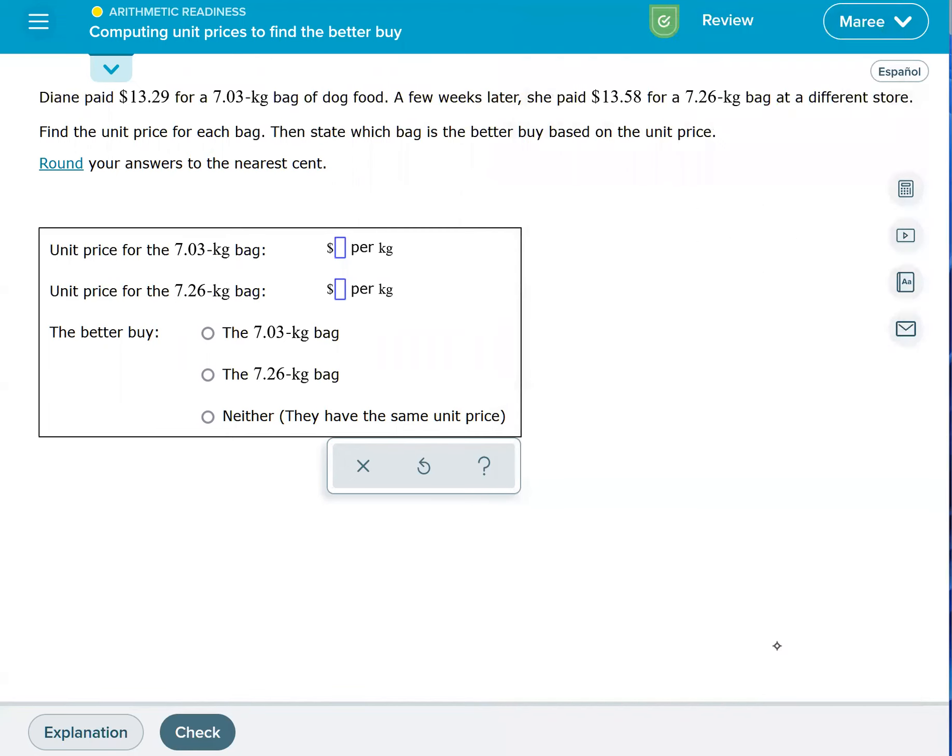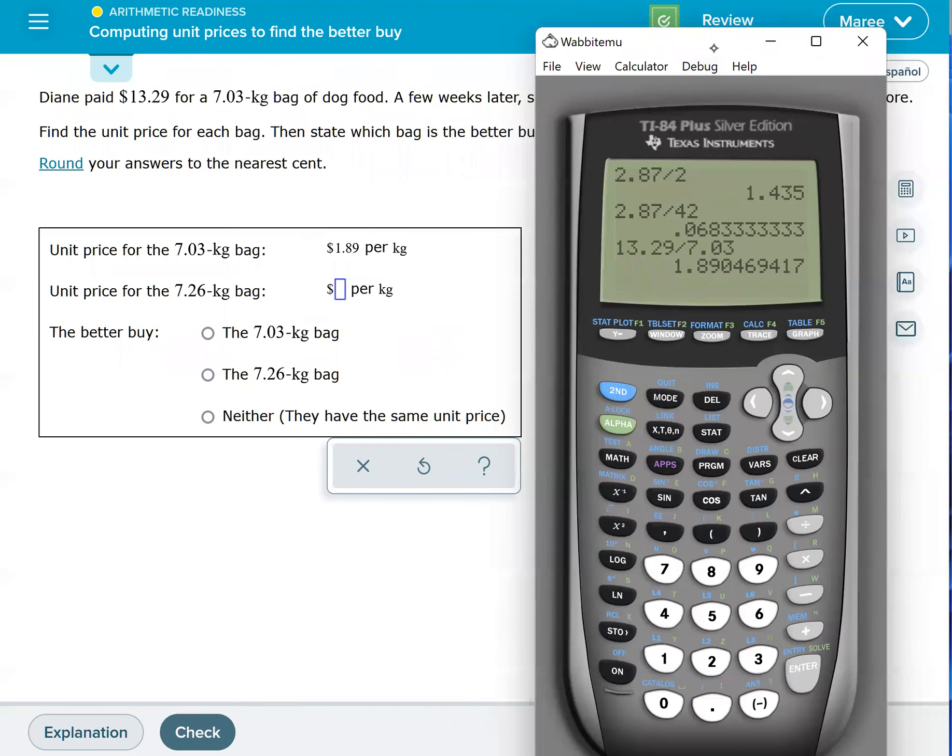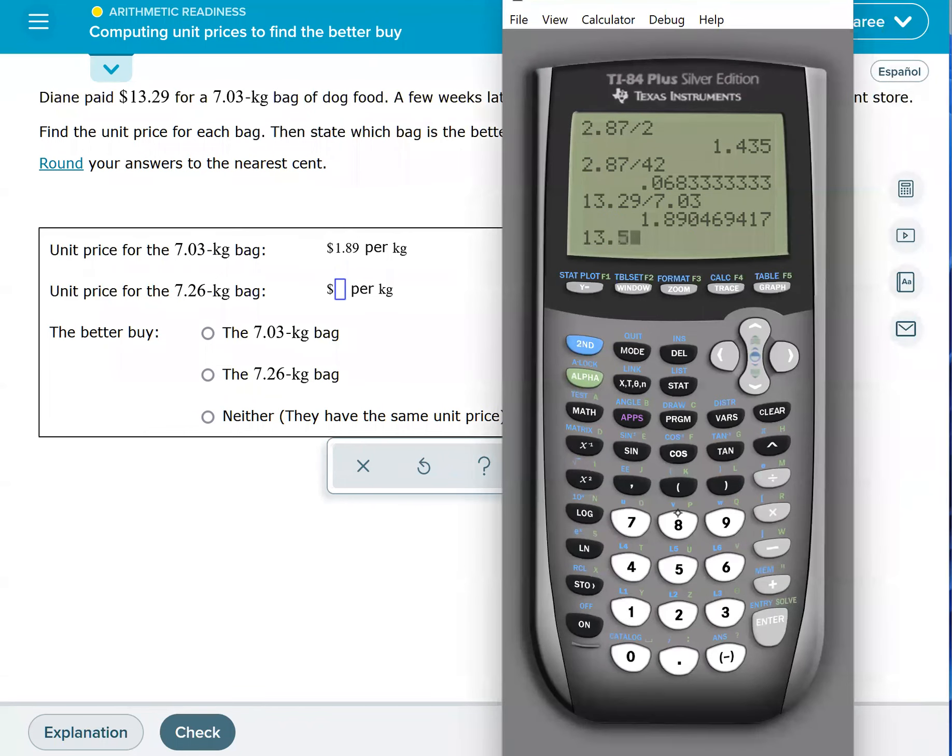So we're going to type in $1.89. And then we'll take 7.26—so we have $13.58 divided by 7.26, and it will be $1.87.